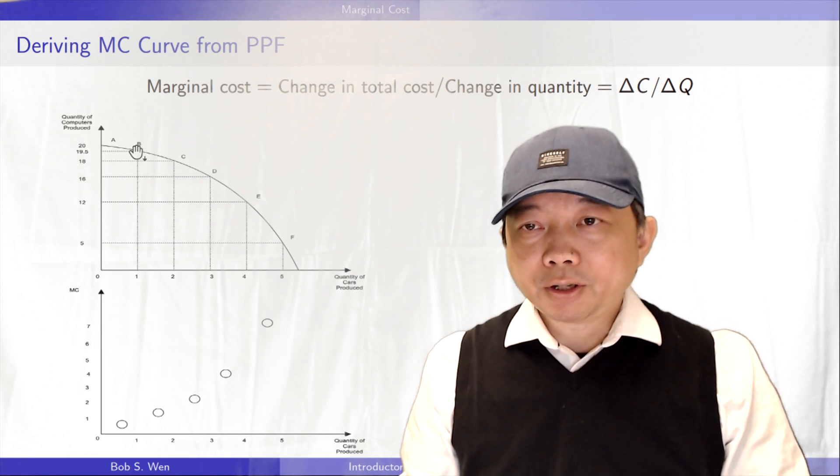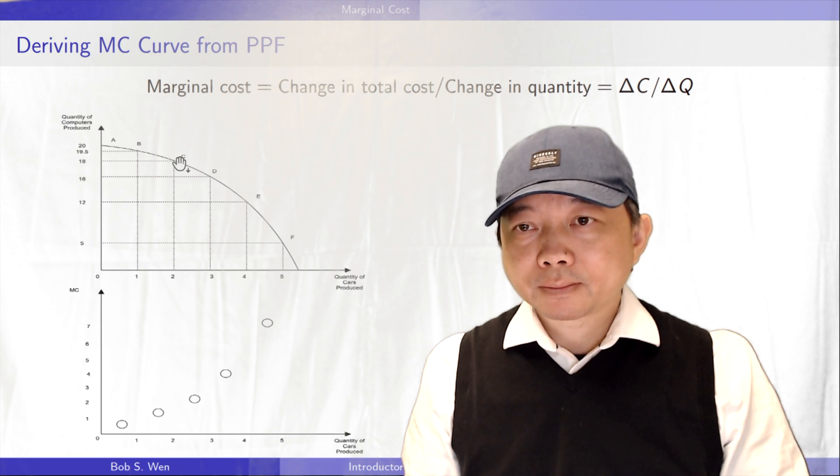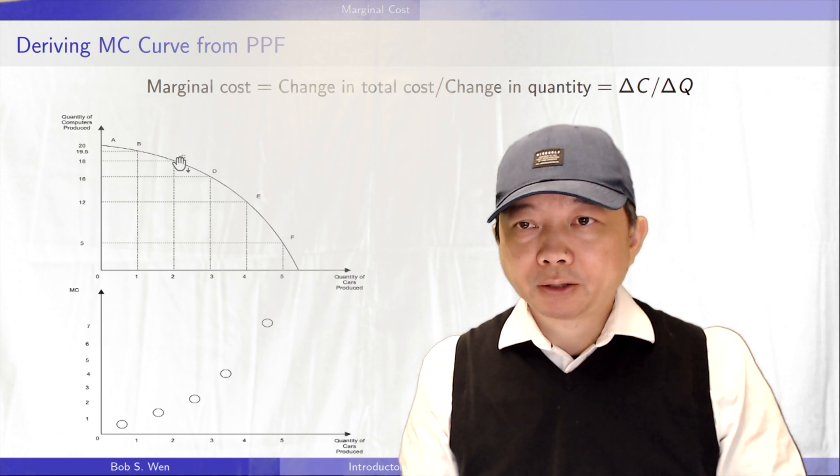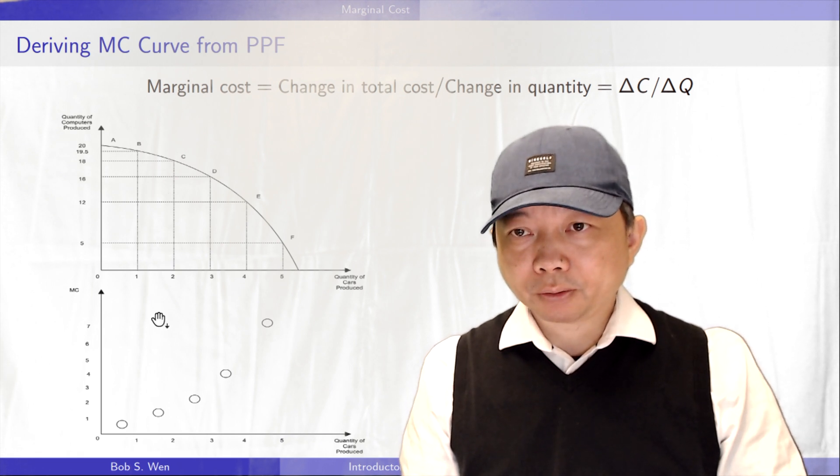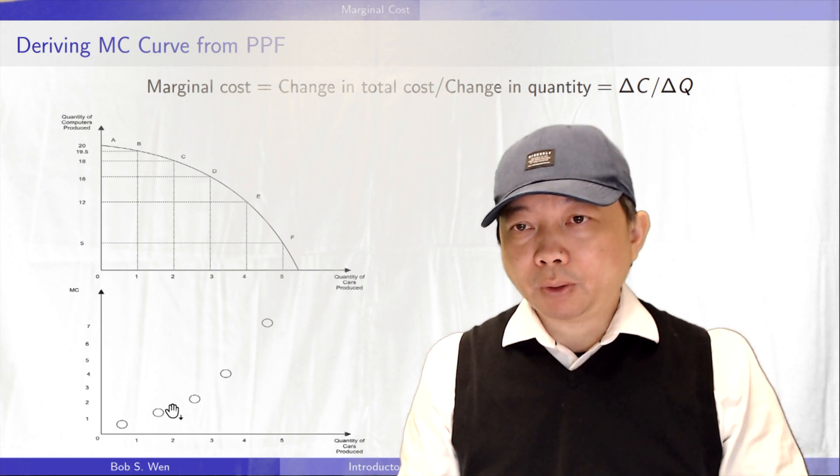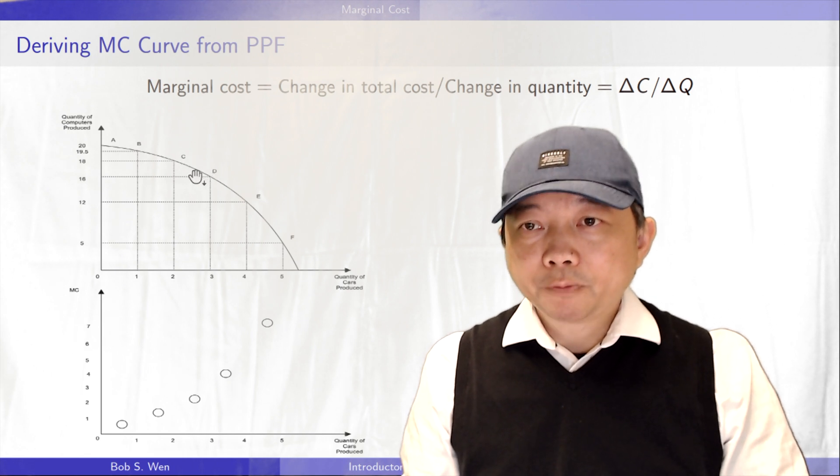Let's continue to draw the marginal cost from one car to two cars. We have to forego 1.5 units of computers. So we plot 1.5 between 1 and 2. We repeat the calculation for each interval on the PPF, and plot the marginal cost for each interval of cars produced.